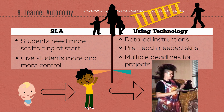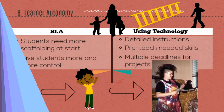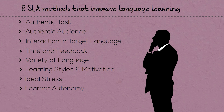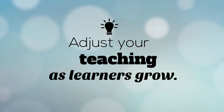In terms of technology, start with very detailed instructions for your beginning learners. Then start pre-teaching skills and giving less detailed instructions as they progress. Once they've reached the more advanced stage at the end of the semester, you can require multiple deadlines and multiple tasks as part of their independent project. I strongly believe that if you're teaching the same way at the end of the semester as you did at the beginning, you're doing it wrong. We need to adjust our teaching methods as learners grow.